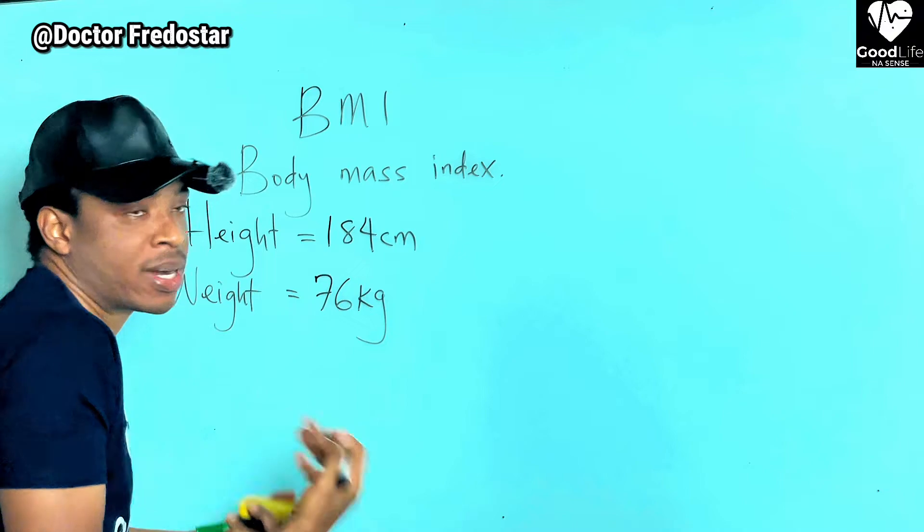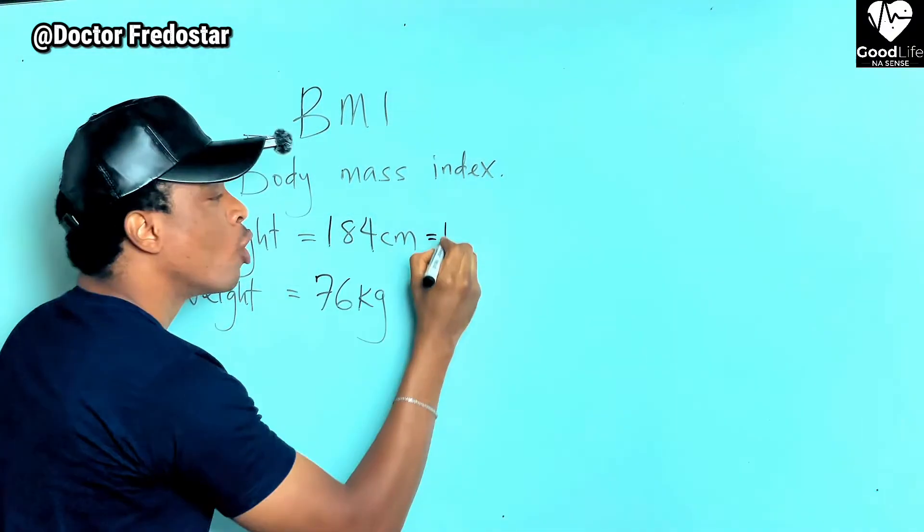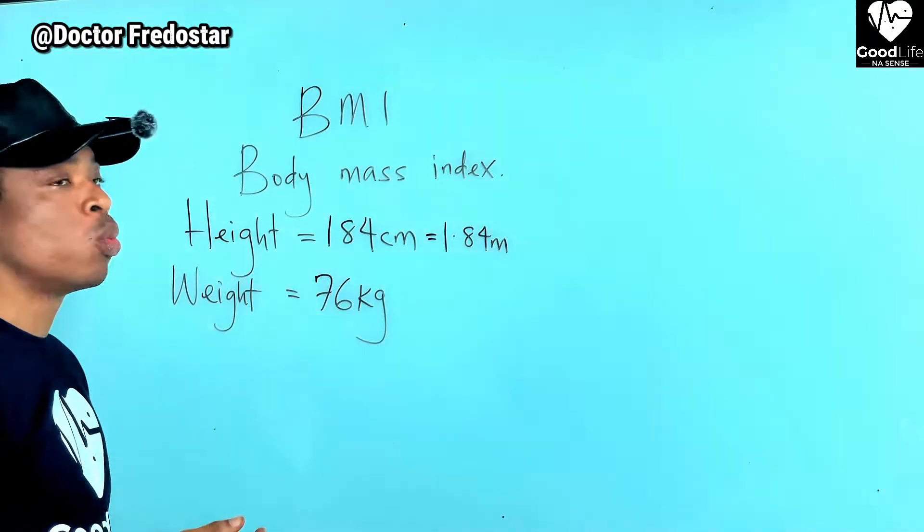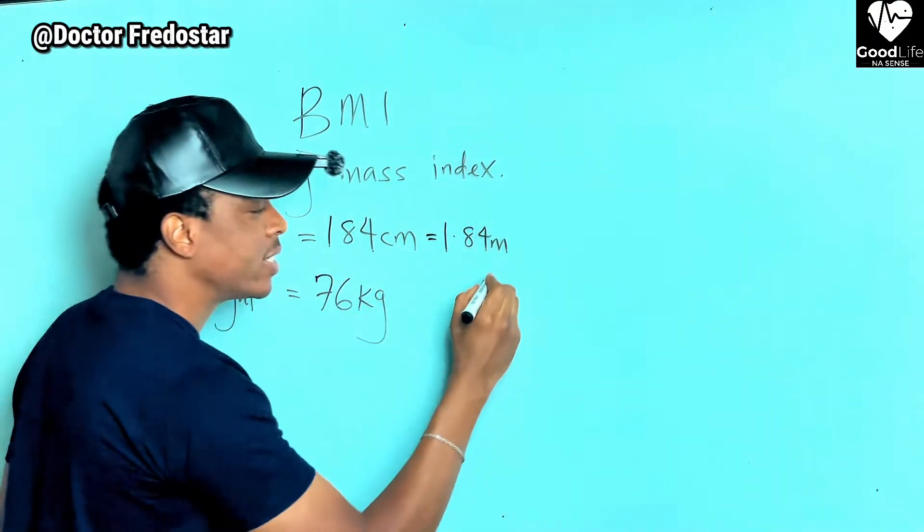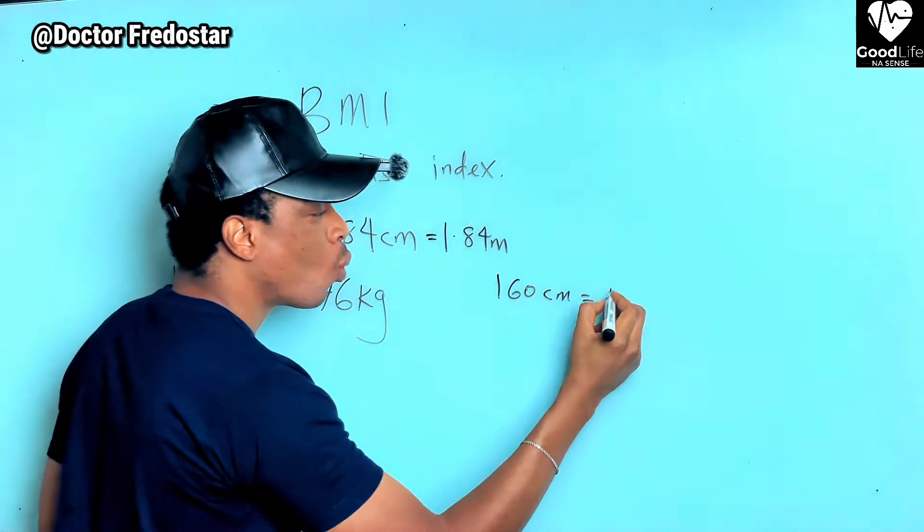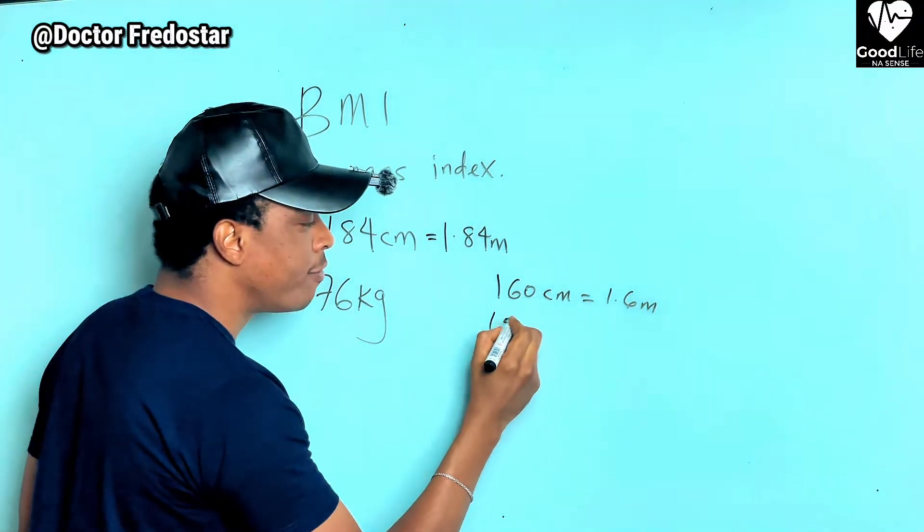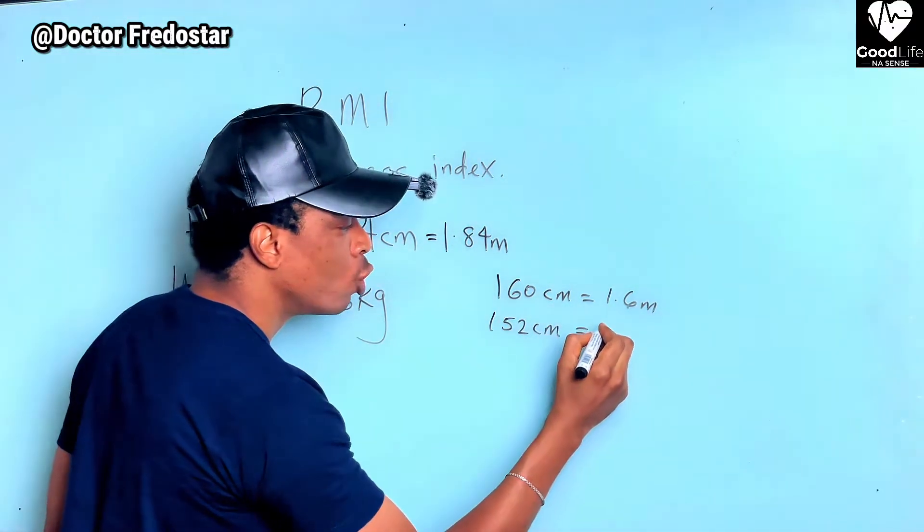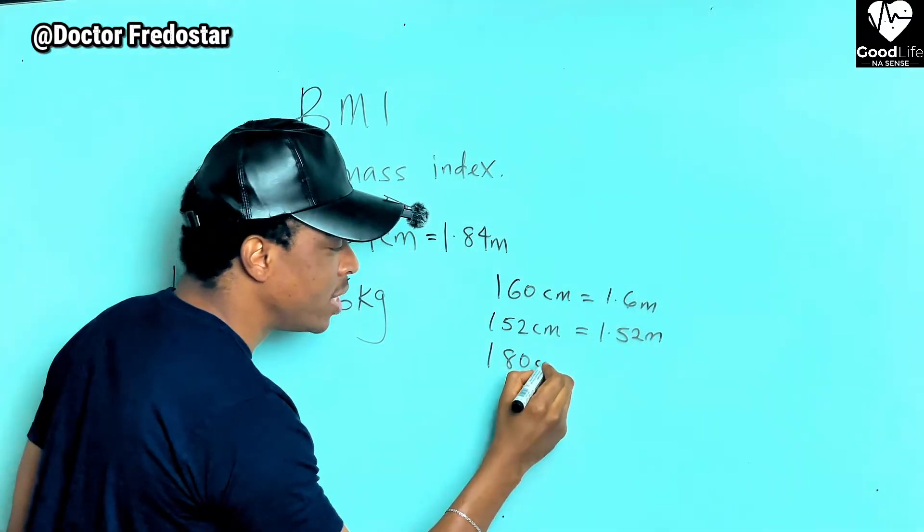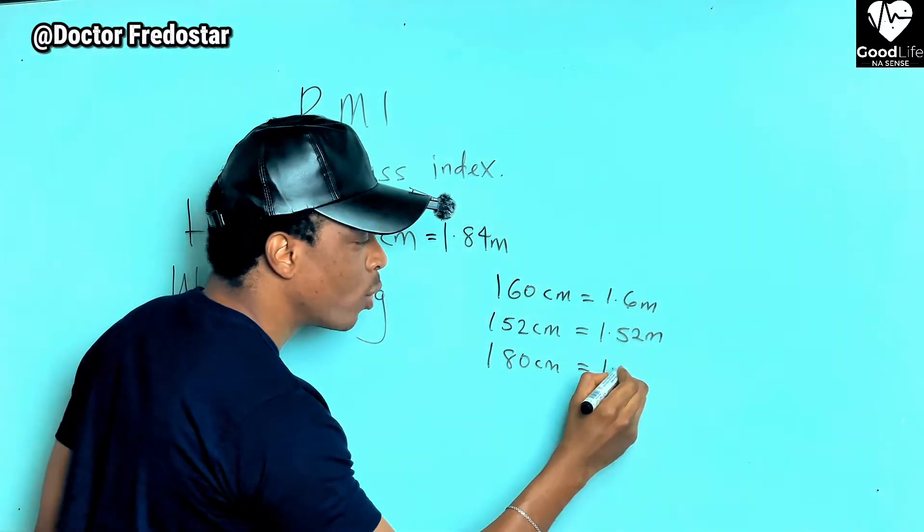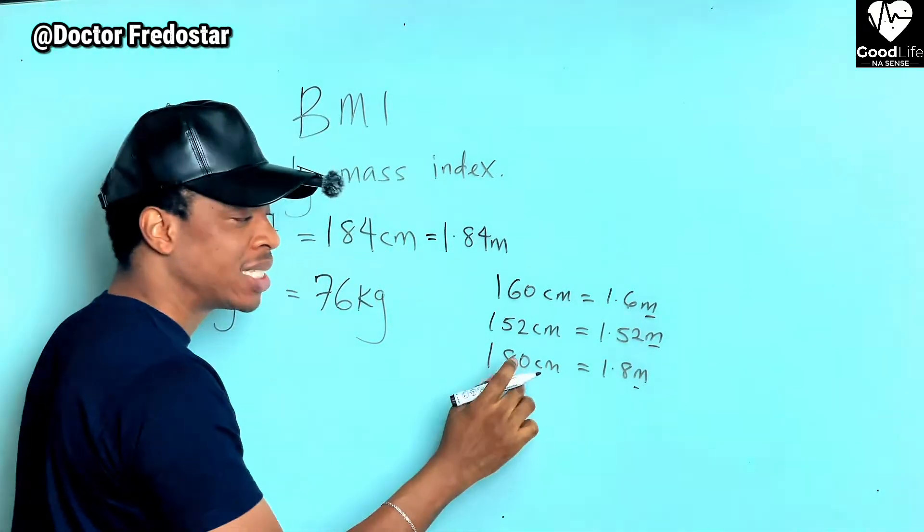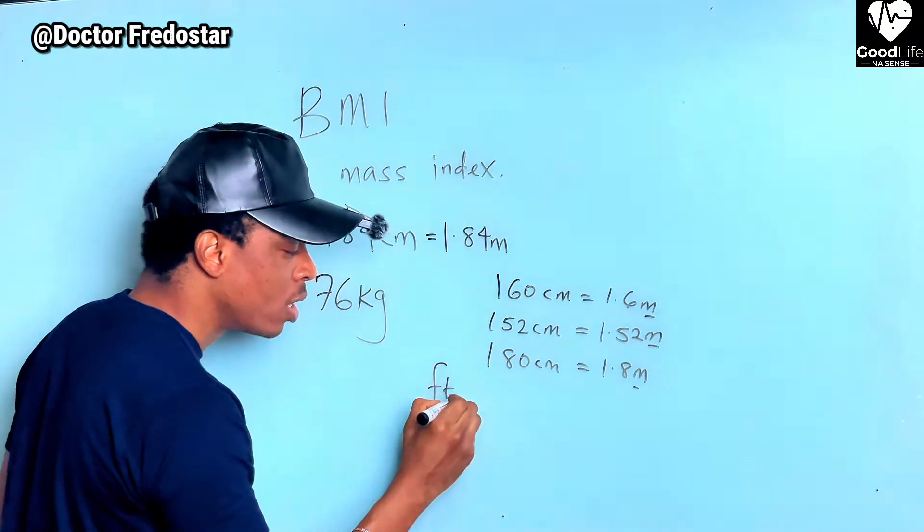Now to calculate your BMI, this height, we can do like this: 1.84 meters. What do you do? Calm down. If your height now is 160 centimeters, you will use 1.6 meters. If your height is 152 centimeters, you will do like this: 1.52 meters. If your height is 180 centimeters, then you will use 1.8 meters. Now meter you must use, not centimeters, not feet, but meters.